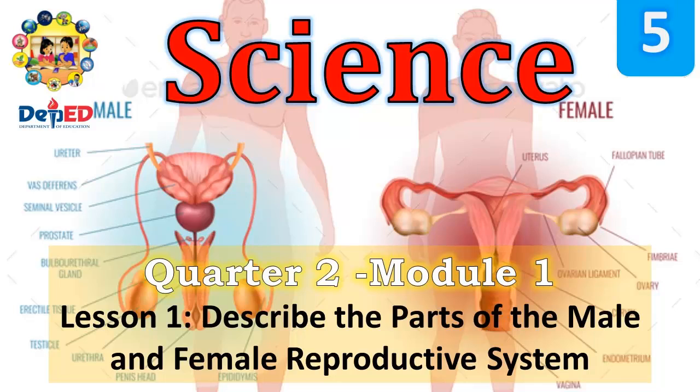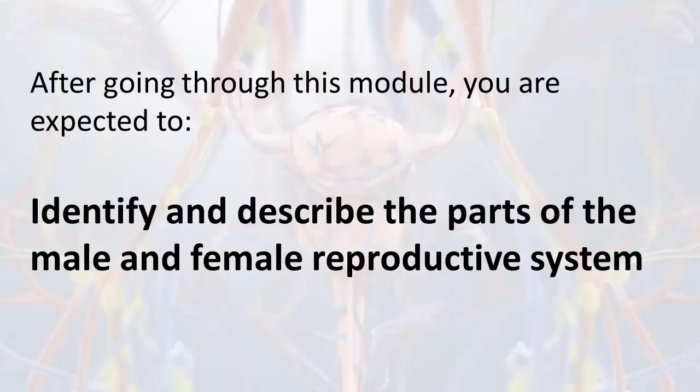Science Grade 5, Quarter 2, Module 1, Lesson 1: Describe the Parts of the Male and Female Reproductive System. After going through this module, you are expected to identify and describe the parts of the male and female reproductive system.